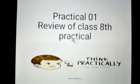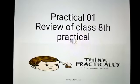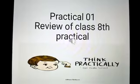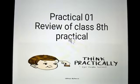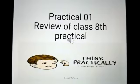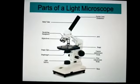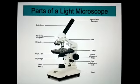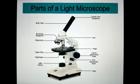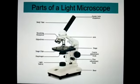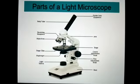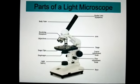Now move toward the practical. Practical element one: review of class eighth practical. Here we are going to discuss about the practicals which we have learned in class eighth. Here is the diagram of the light microscope. You have to draw this microscope on your practical note copies and also mention the labelling.